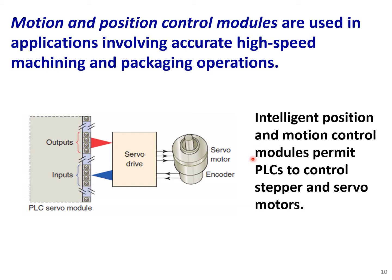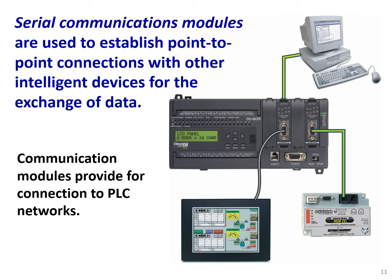Intelligent position and motion control modules enable PLCs to control stepper and servo modules. Another special type of output module includes HMIs. Serial communication modules are used to establish point-to-point connections with other intelligent devices for the exchange of data. Communication modules provide connection to PLC networks. This serial connection can be used to send data to an oscilloscope, HMI, or any output device that accepts serial output or has RS ports.